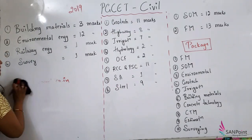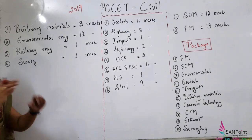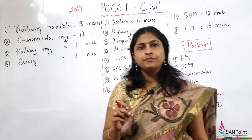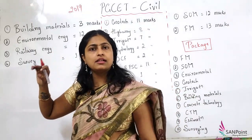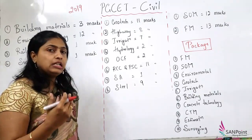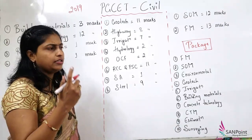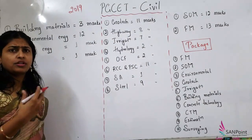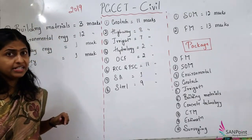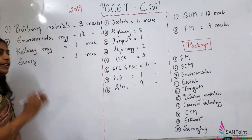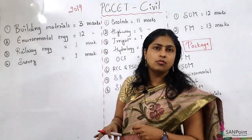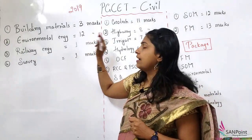As per our analysis of previous year papers, questions on building materials were asked for 3 marks. The various building materials include stones, bricks, aggregates, clay materials, tiles, cement, and concrete. However, I haven't found a single question on concrete — only one test question appeared, but no properties or admixtures. You can expect more questions from bricks in building materials. Next comes environmental engineering, which has 12 to 14 marks weightage in GATE and similarly here and in other government exams.